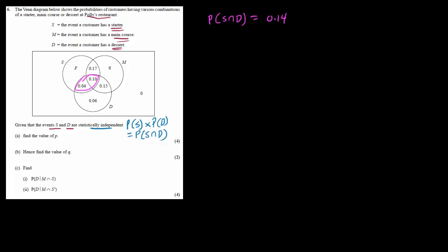Now let's find out the probability of S. The probability of S would be this entire circle. So let's add up: 0.04 plus 0.10 is 0.14, plus 0.17, and that is 0.31, plus the unknown probability P. So that is the probability of S. Now the probability of D — the probability of D is this circle over here, and the probability of D is 0.35.